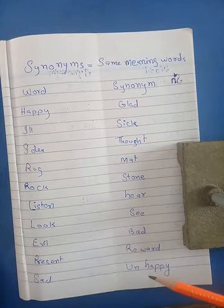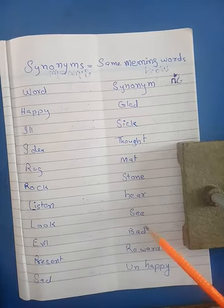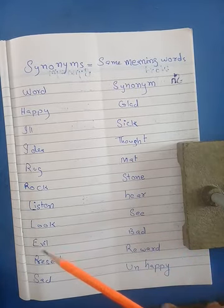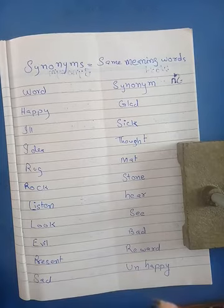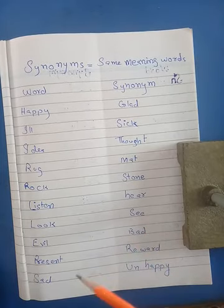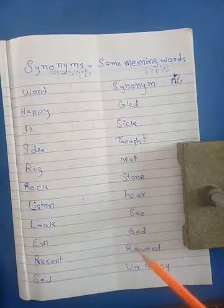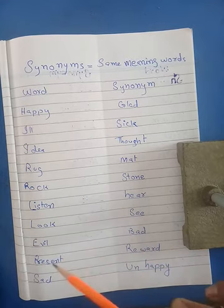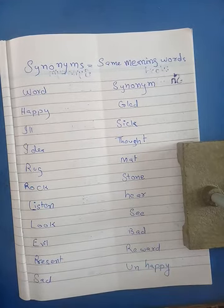آپ نے اپنی books میں کئی بار پڑھا ہوگا۔ Look کا مطلب ہوتا ہے دیکھنا، تو یہ ہم اس کو کہیں گے synonyms۔ Evil — bad۔ Evil کا مطلب خراب ہوتا ہے، evil or bad مطلب بہت خراب۔